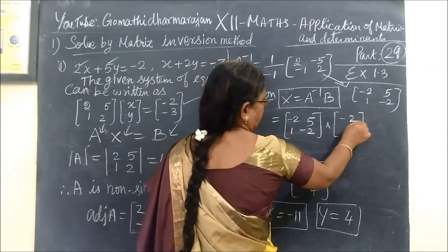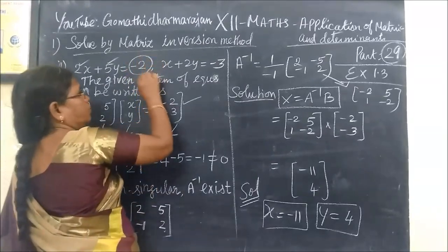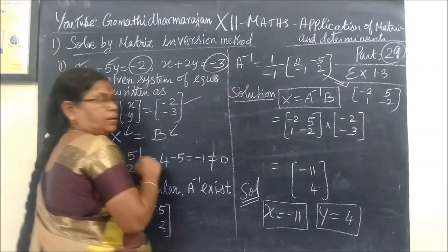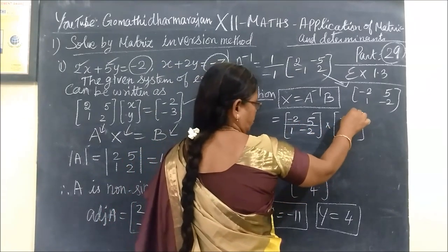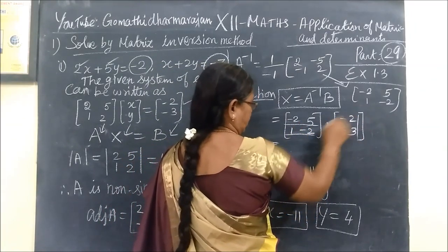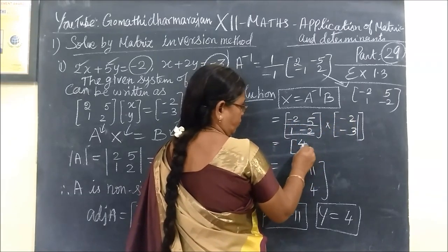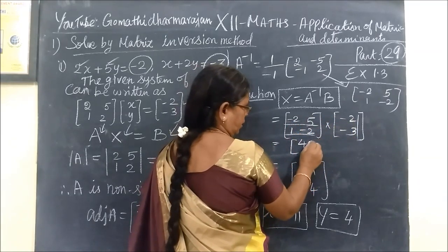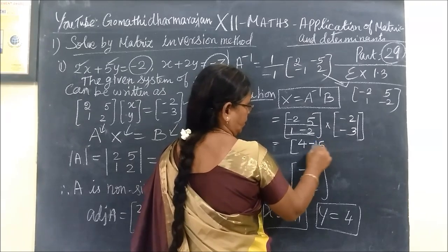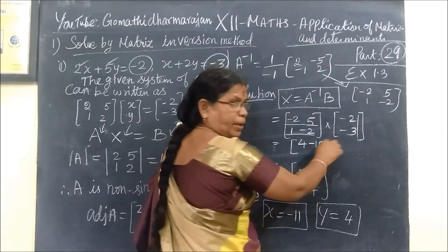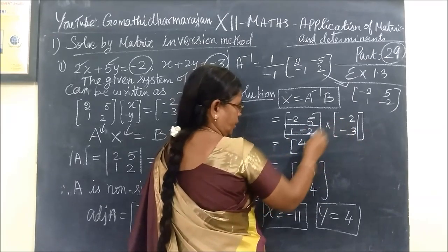If S equal to A equals B, then A equals here: minus 2, 5, 1, minus 2 into B. B in the index — minus 2, minus 3 — is the constant term. So first row, first column, then first row, second column. Multiply: minus 2 times minus 3 gives 4, then minus 15.